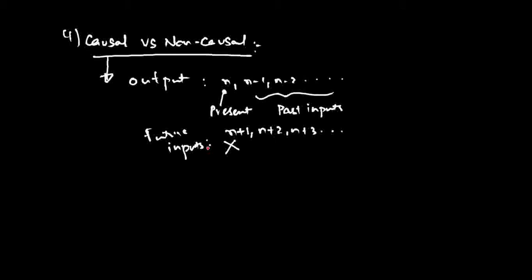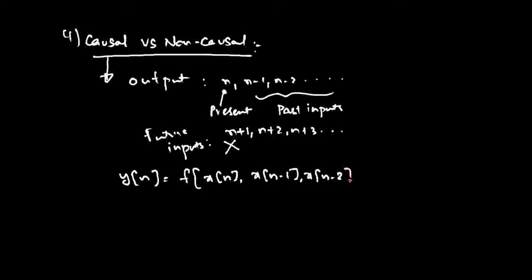The output of a causal system should have the following form: y of n should be a function of x of n, x of n minus 1, x of n minus 2, and so on. If a system has this kind of input-output characteristic, then it is said to be a causal system. If the system does not satisfy this condition, then it is said to be a non-causal system.